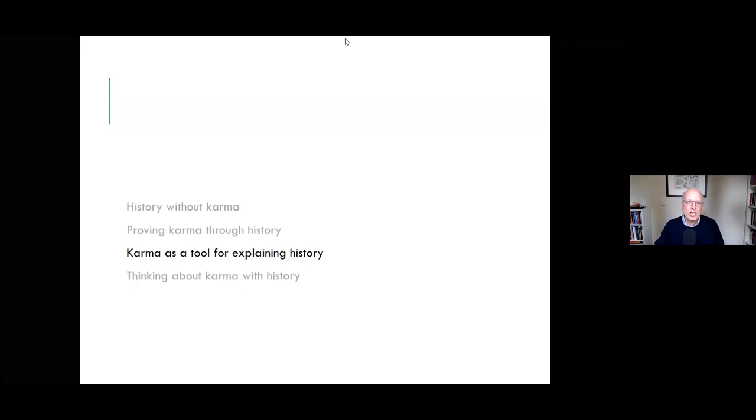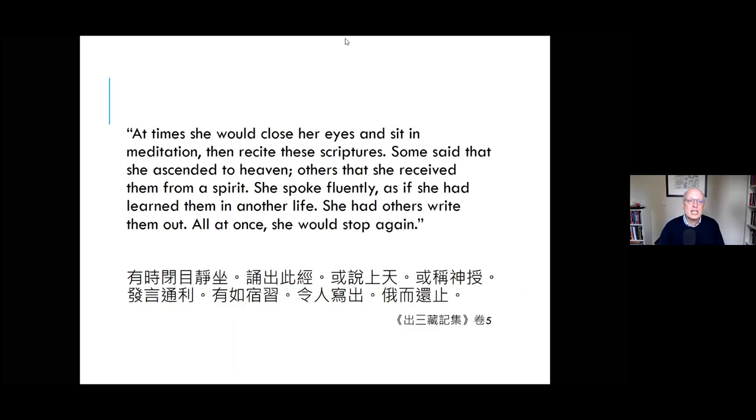There's a famous instance that a number of modern scholars have drawn attention to in which at the end of the 5th century, word spread of a remarkable young girl who at the age of eight would fall into a trance and recite entire Buddhist scriptures that no one had heard of. These episodes continued until she was sixteen. At times she would close her eyes and sit in meditation, then recite these scriptures. Some said she ascended to heaven, others that she received them from a spirit. She spoke fluently, as if she had learned them in another life. She had others write them out, then all at once would stop again.